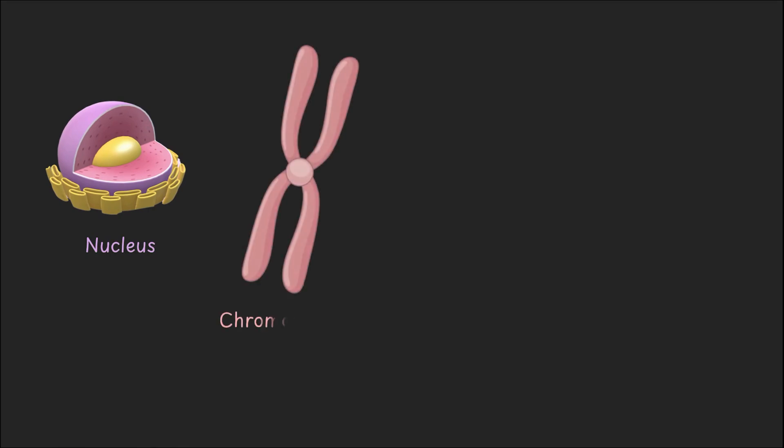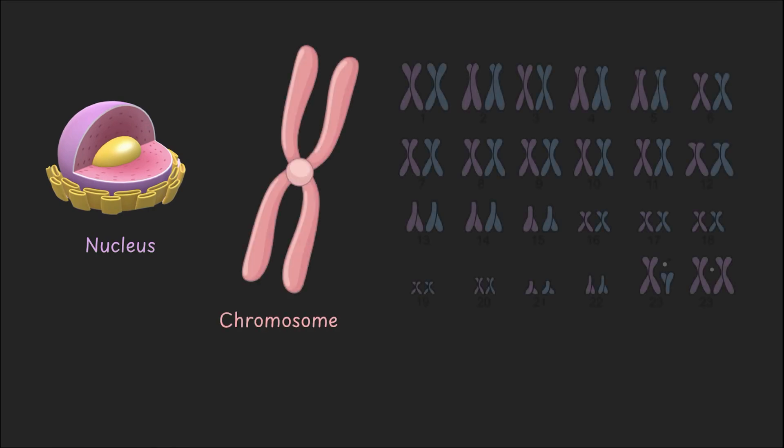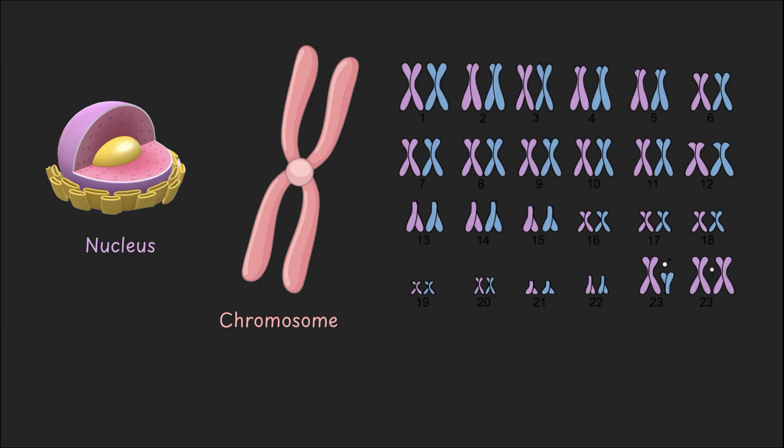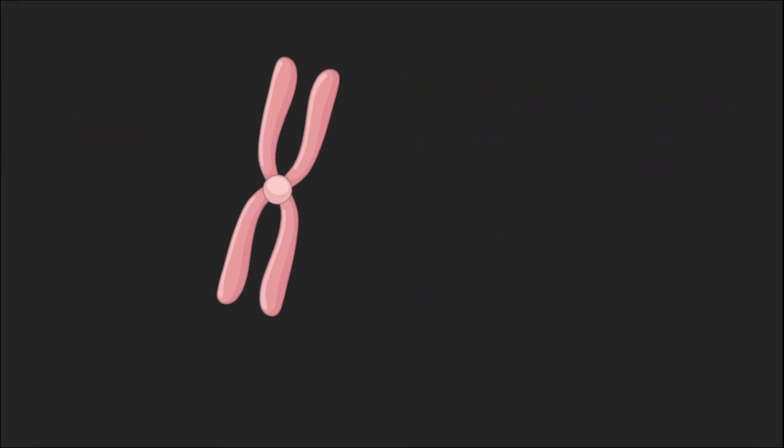Inside there are chromosomes. Each of us has 46 chromosomes. That is 23 pairs. 23 from mom and 23 from dad. And what are chromosomes made of?